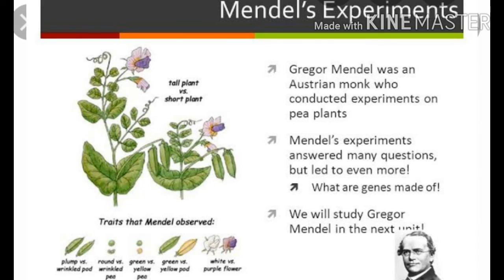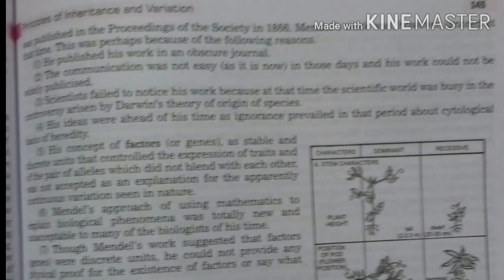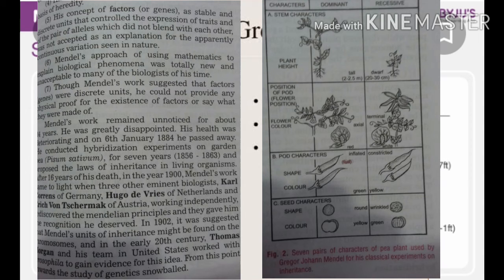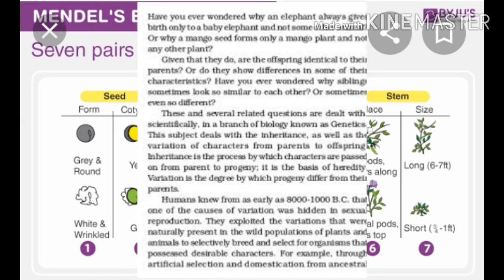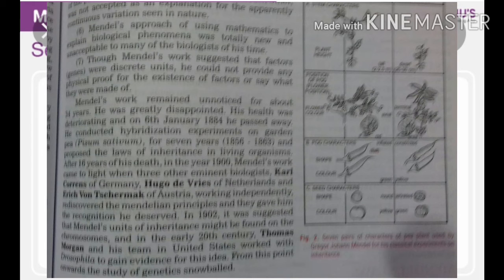After 16 years of his death, in the year 1900, Mendel's work came to light when three other biologists — Correns of Germany, Hugo de Vries of the Netherlands, and Erich von Tschermak of Austria — working independently, rediscovered the Mendelian principles and gave him the recognition he deserved. In 1902, it was suggested that Mendel's units of inheritance might be found on the chromosomes, and in the early 20th century, Thomas Morgan and his team in the United States worked with Drosophila to gain evidence for this idea. From this point onwards, the study of genetics snowballed.